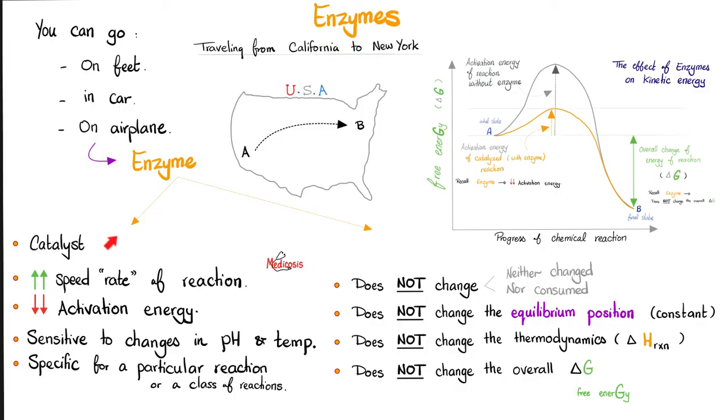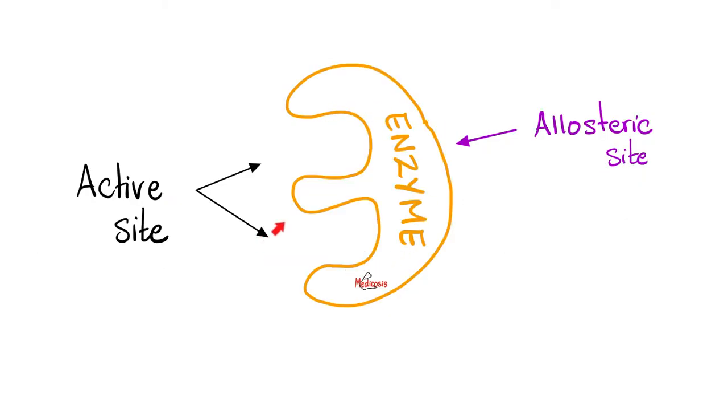Enzymes are catalysts. They do increase the rate of the reaction. They decrease the activation energy. However, they do not change. They're not consumed. They do not change the equilibrium position, the thermodynamics, or the overall delta G. Here is my wonderful enzyme. This is called the active site. The one behind it, the back door, is the allosteric site. Front door, active site. Back door, allosteric site. What does the word allo mean? It means different, the opposite of iso.